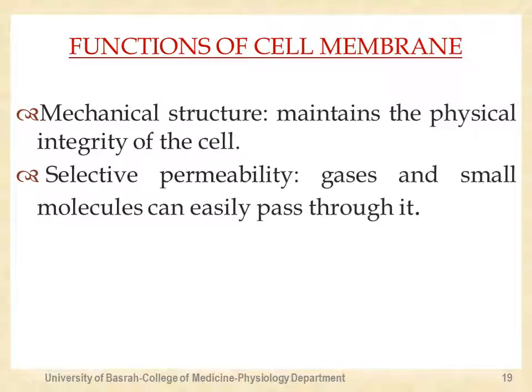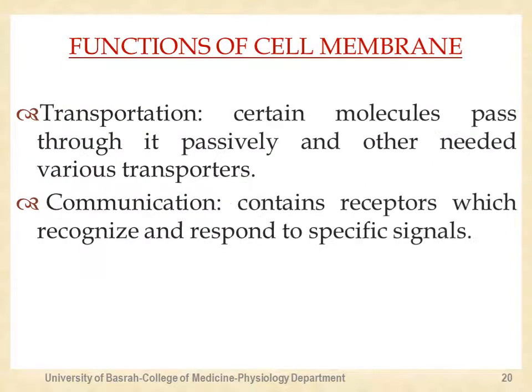In general, the functions of the cell membrane are: first, mechanical structure — maintaining the physical integrity of the cell, giving the cell its identity, and protecting it from the outside. Second, selective permeability — gases and small molecules can easily pass through, while other substances must pass within regulated limits. Third, transport of certain molecules — some pass passively and others require various transporters. Fourth, cell communication — the membrane contains receptors that recognize and respond to specific signals.